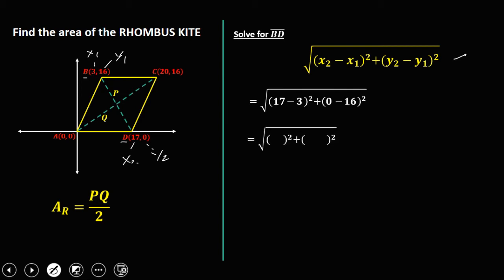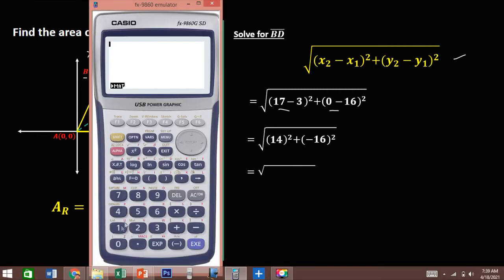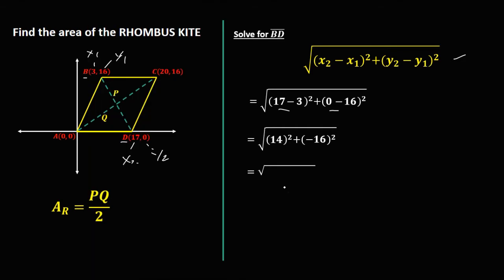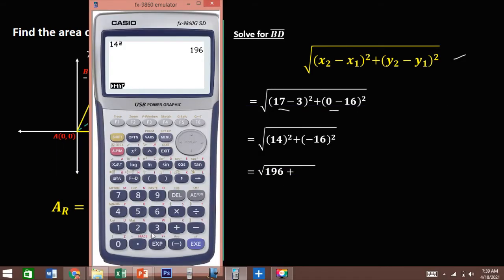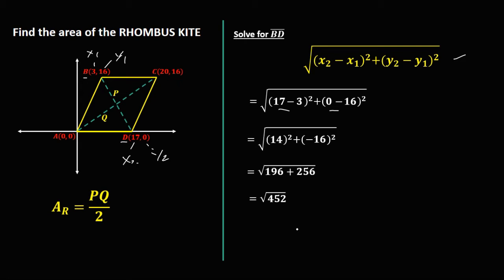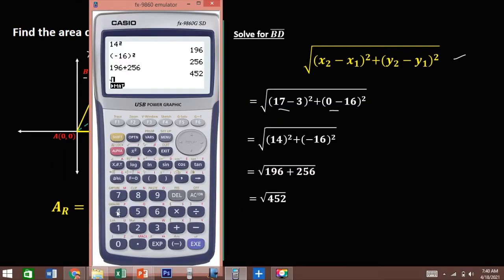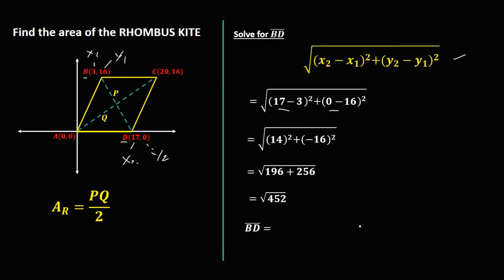Then 17 minus 3, that's 14. Then 0 minus 16, that's negative 16. Then simplify: so we have 14 squared, that's 196, plus negative 16 squared — so in squaring a negative, you need to put it inside the parentheses — negative 16 squared, that's 256. Then you add: 196 plus 256, that's 452. Then take the square root of 452, that's 21.26. So therefore, line BD or P, the distance from point B to D, is 21.26.